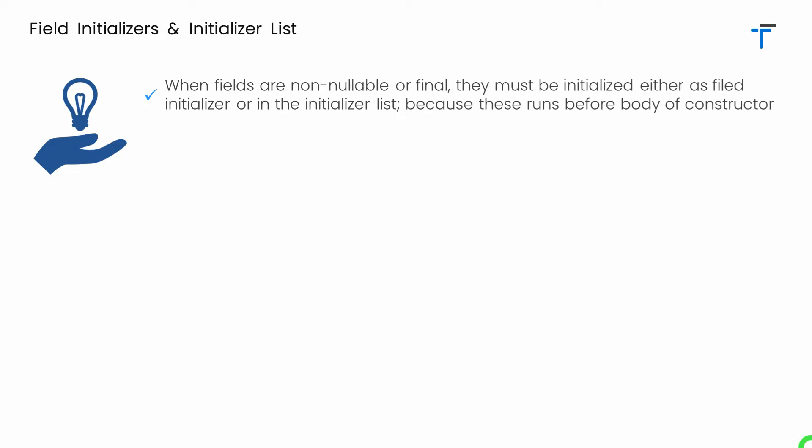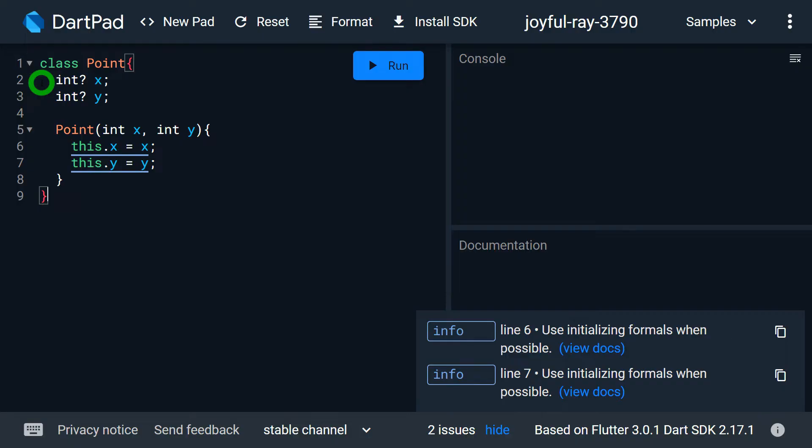When fields — that is, data members — are non-nullable or final, they must be initialized either as the field initializer or inside the initializer list. This is because the field initializer and the initializer list execute before the body of the constructor. Let me explain this with an example, as this point must be clear to every Dart and Flutter developer.